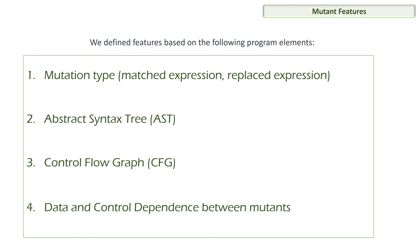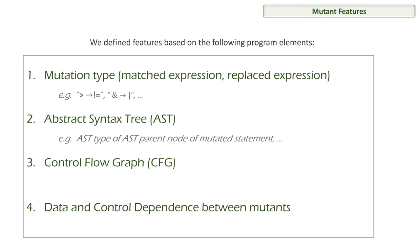The features we use fall into four categories: mutant types, abstract syntax tree (AST) based features, control flow graph (CFG) based features, and data and control dependency based features. An example of mutant type features is the actual mutant type — what is matched and what is replaced, e.g., greater-than becomes not-equal. For AST features, we use the AST of the parent node of the mutation statement. CFG features include the number of basic blocks that precede the basic block containing the mutated statement. Data and control dependency features include the number of nodes on data-dependence chains for the mutated statement.